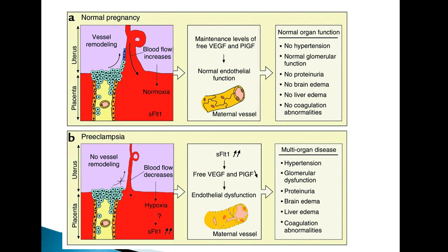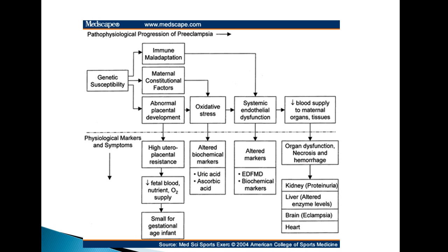Endothelial dysfunction doesn't affect only one part of the body — it affects all other organs because all organs are perfused. This patient may have multi-organ dysfunction. They may present with hypertension, glomerular dysfunction, proteinuria, brain edema, liver edema, and coagulation abnormalities. Here is the progression of preeclampsia.